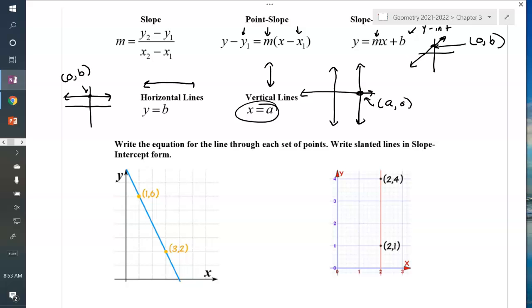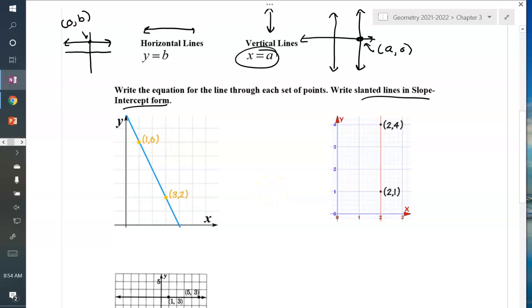All right, so we're going to do some practice. Write an equation for the line through each set of points. Write slanted lines in slope-intercept form. So our first one, we have this blue line. We have the graph, but we've also got points labeled. And we're going to write the equation of the line through those points. So the first thing we need to do is get the slope.